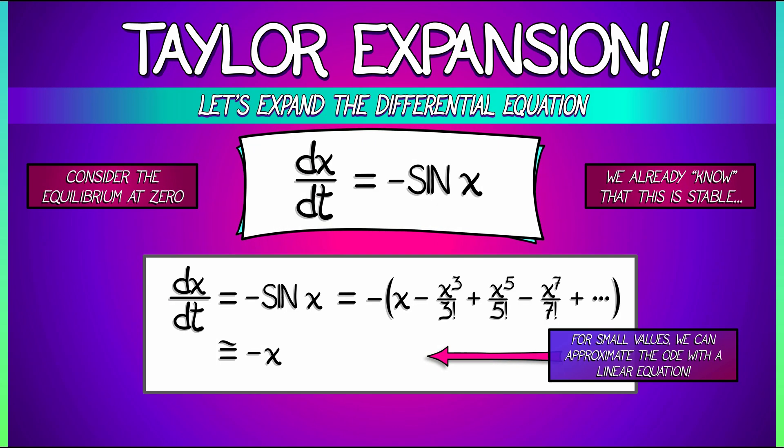Going back to what we've done, that lambda, that coefficient in front of the first order term is negative one. That means it's stable.